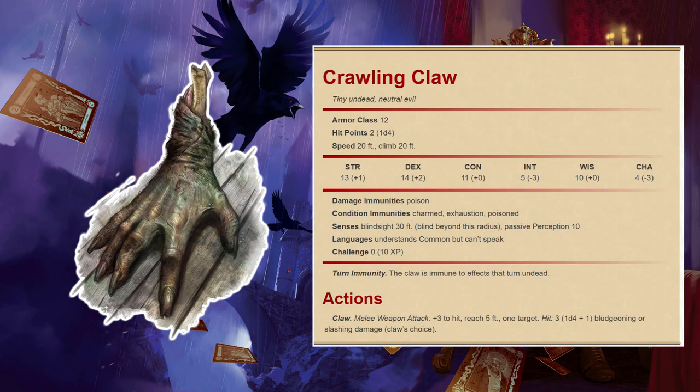Crawling Claws: A mob of severed hands, their mummified flesh black with soot, skitter out of the darkness across the dusty floor. The crawling claws gang up on one party member. During the confusion, one of the claws tries to crawl into a character's backpack and hide there. It makes a dexterity stealth check contested by the character's passive wisdom perception score. If the claw wins the contest, it waits until the character takes a long rest before scuttling out to attack.